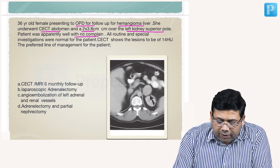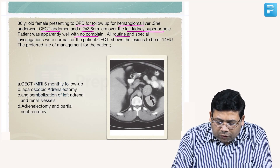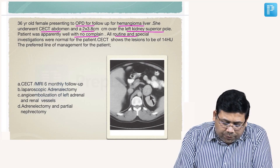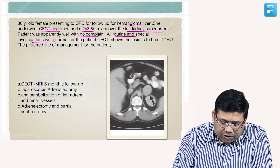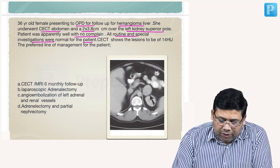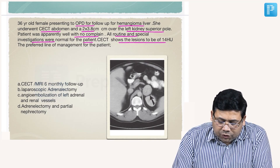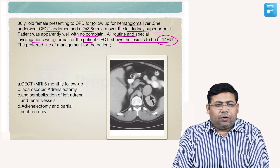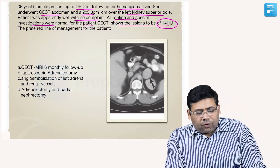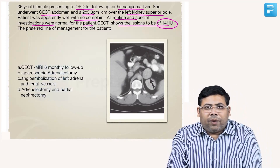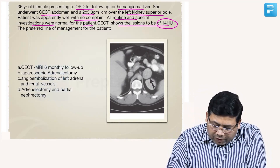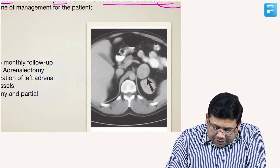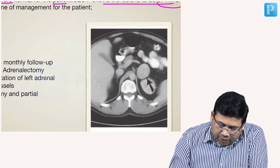All the routine and special investigations were normal. The CT shows the lesion to be of 14 Hounsfield units. What is the preferred line of management?